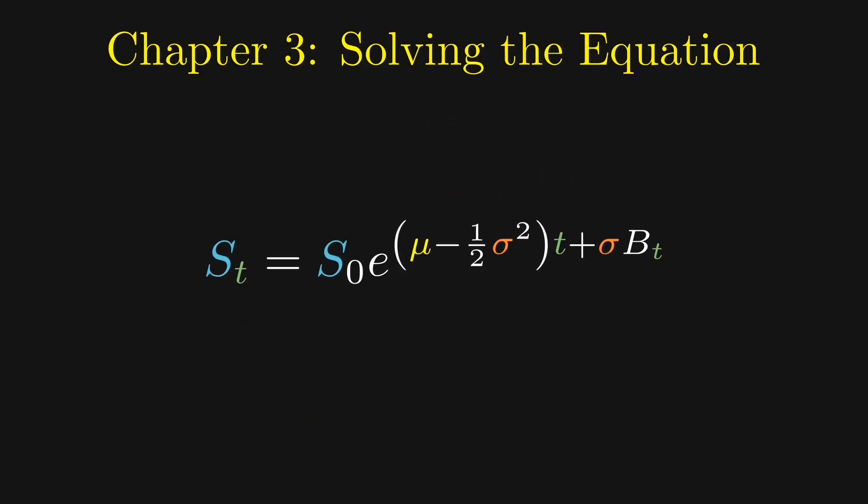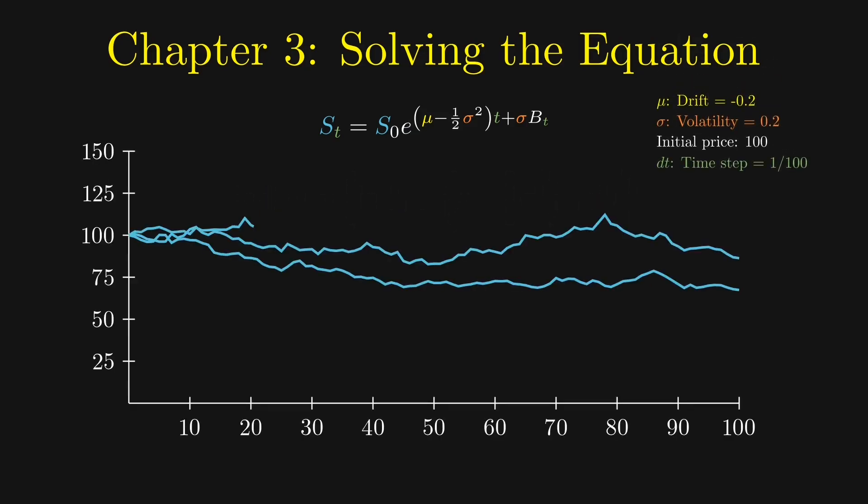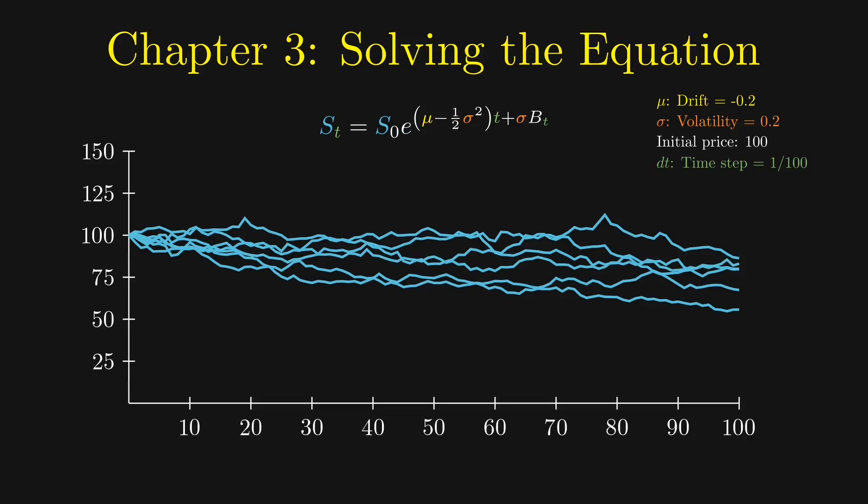Before going into the next chapter, let's first understand what this formula tells us. If we go back a step, this form tells us that the log of a stock's price is normally distributed. This means that the stock price itself follows a log-normal distribution. Moreover, this formula allows us to simulate different possible price paths of a stock. This is crucial to numerical methods for pricing options, but we are focusing on a closed form equation today.